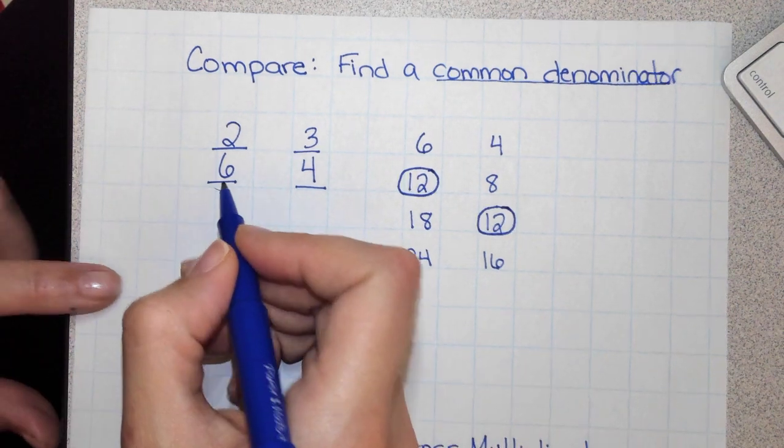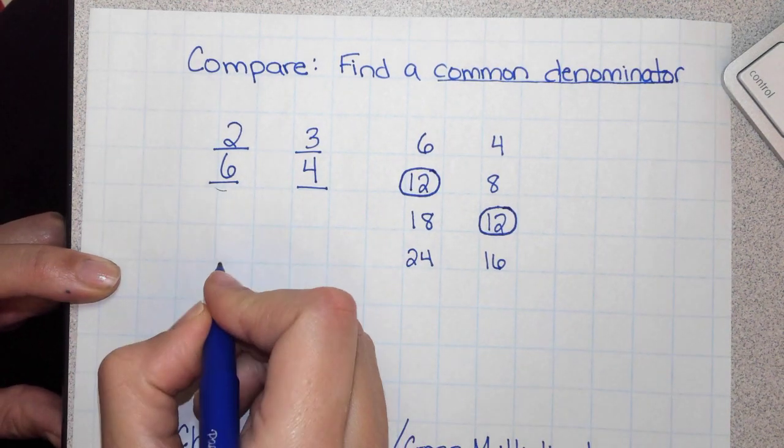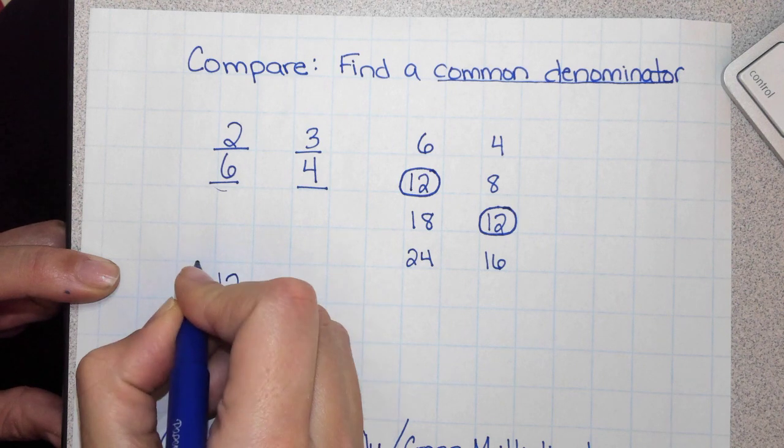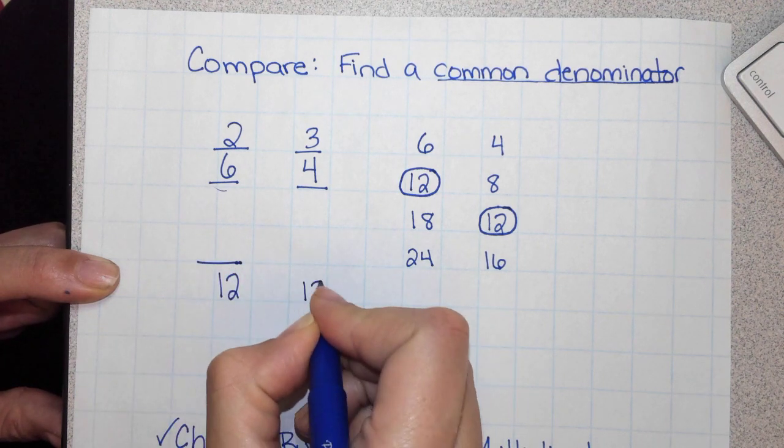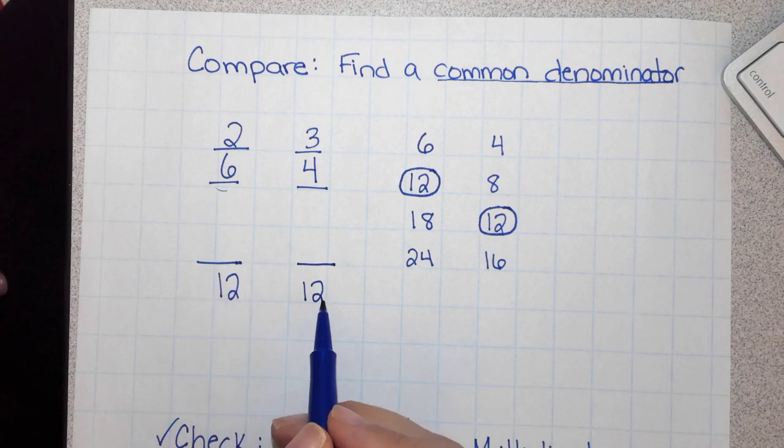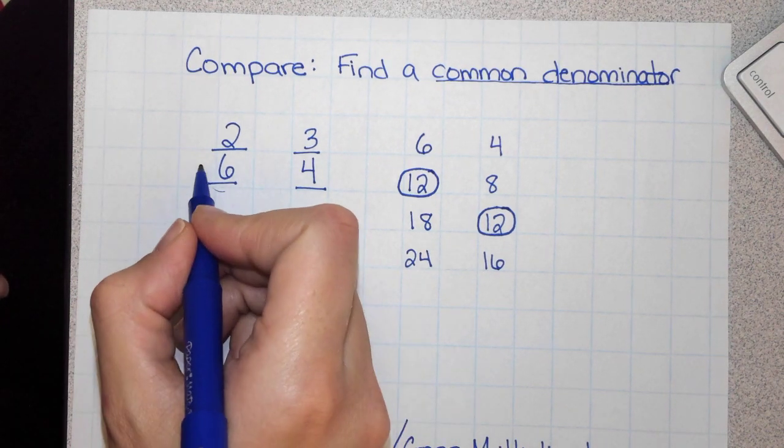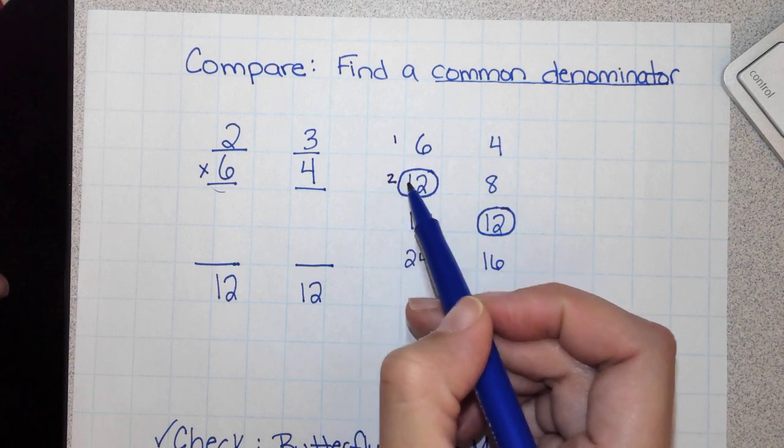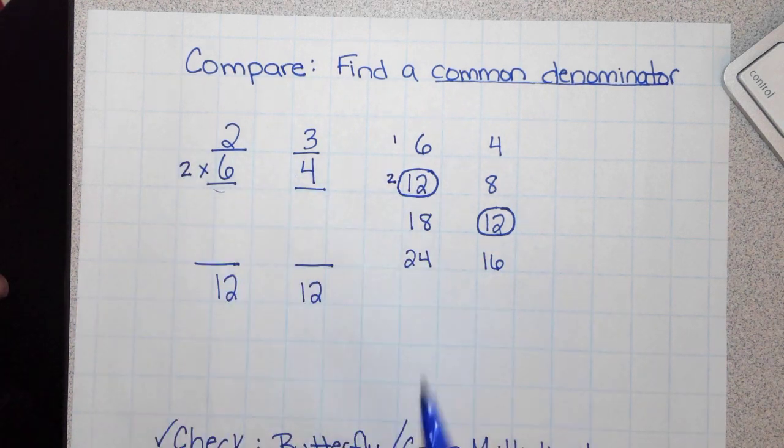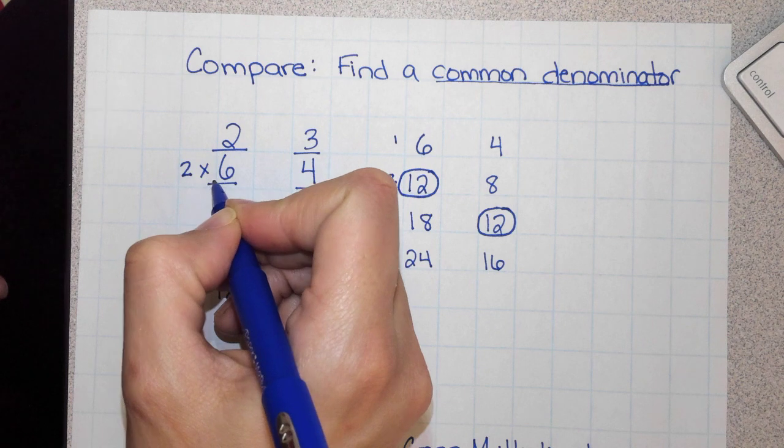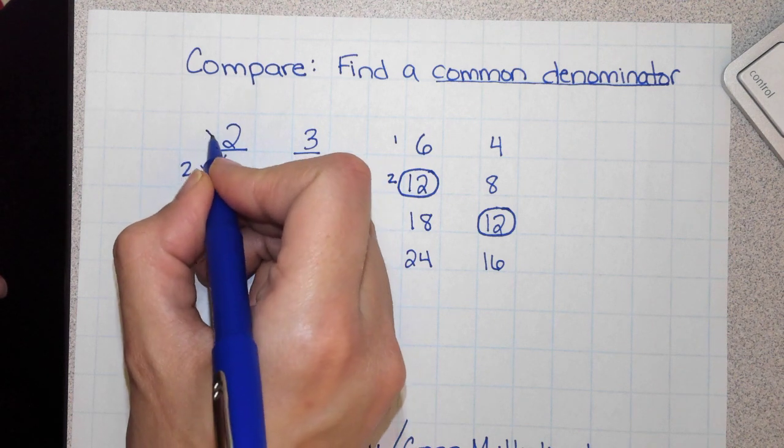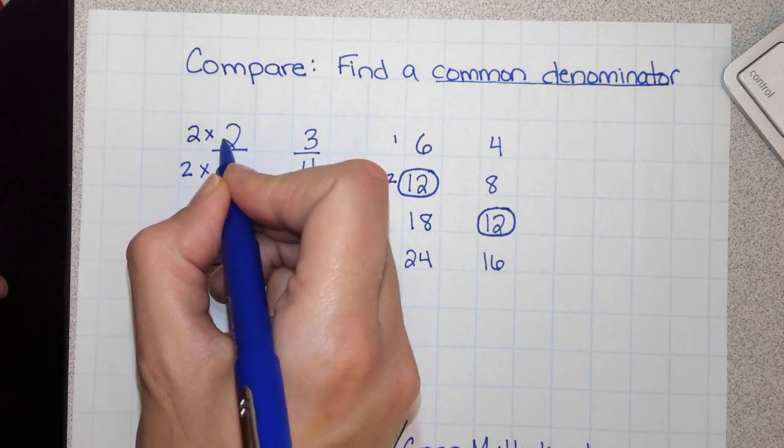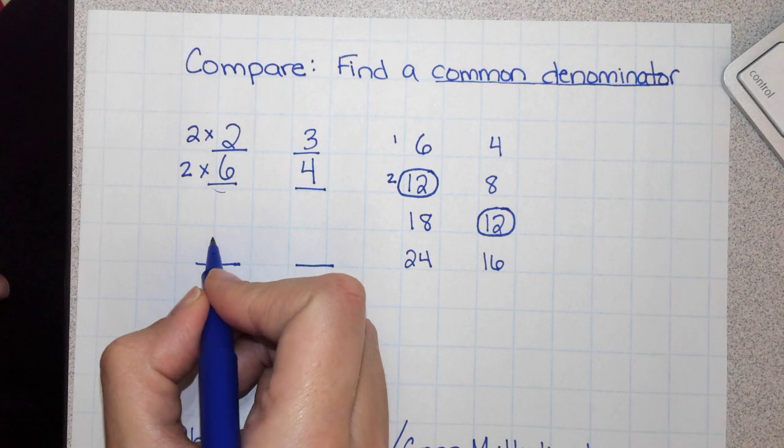So that means I'm going to rewrite these fractions with their new denominator. I'm going to find an equivalent fraction for each one with a denominator of 12. So I multiplied 6 times 2 to get 12. Whatever I do to the bottom, I have to do to the top. I also have to do 2 times 2, which is 4.